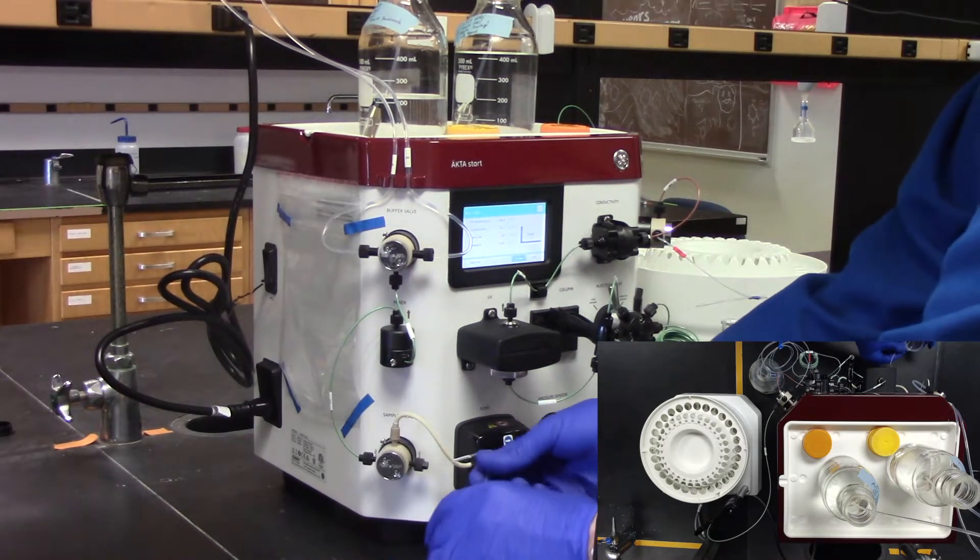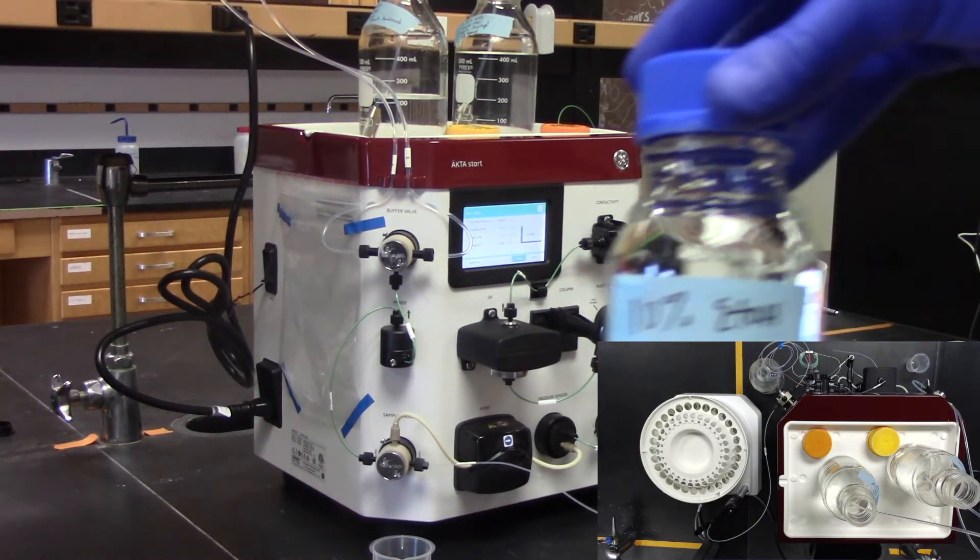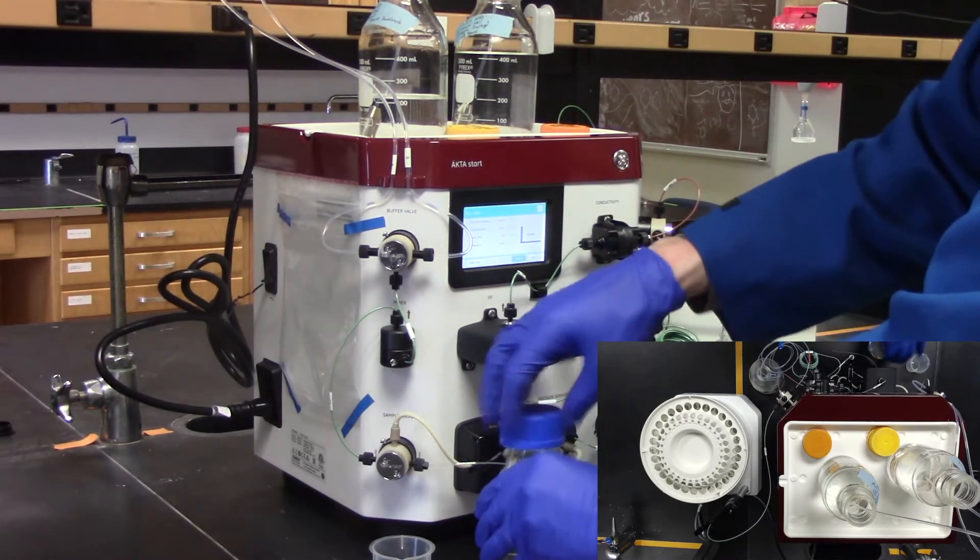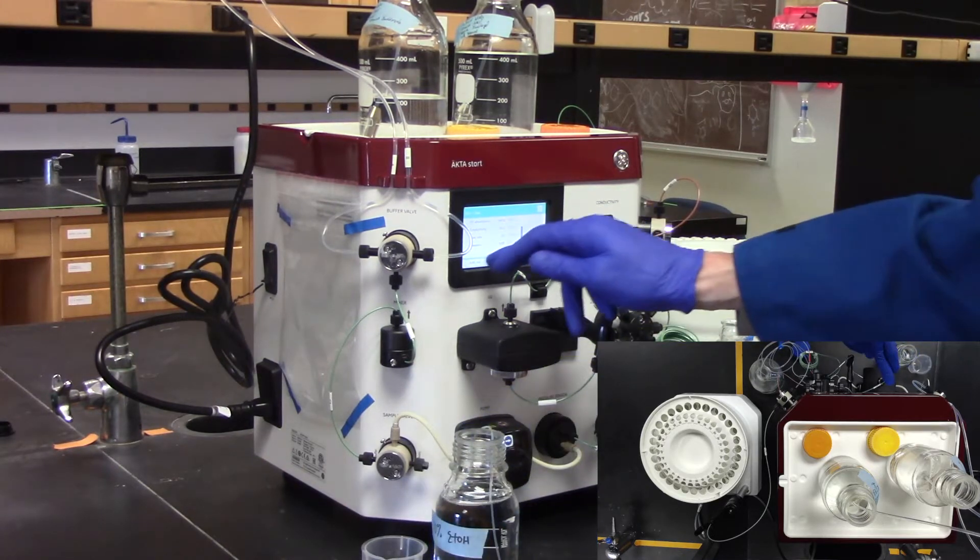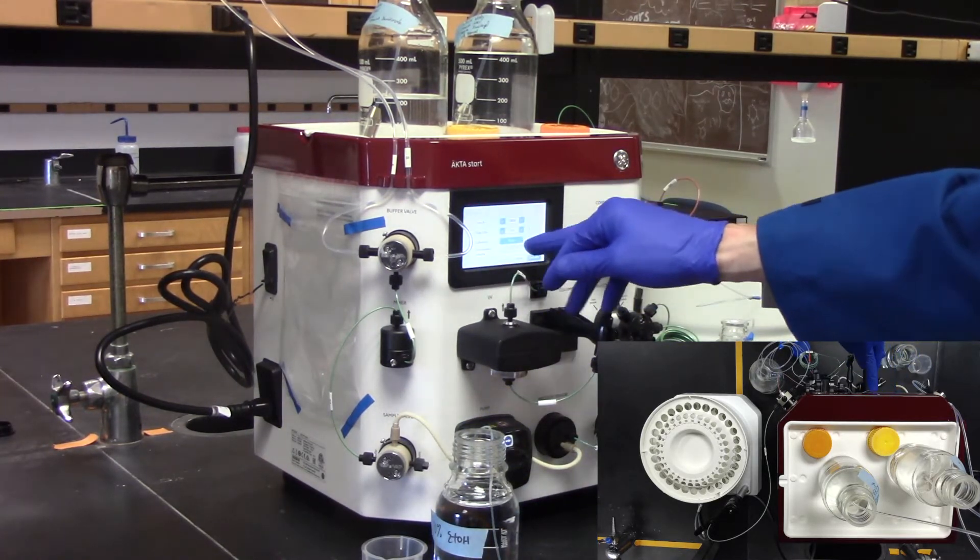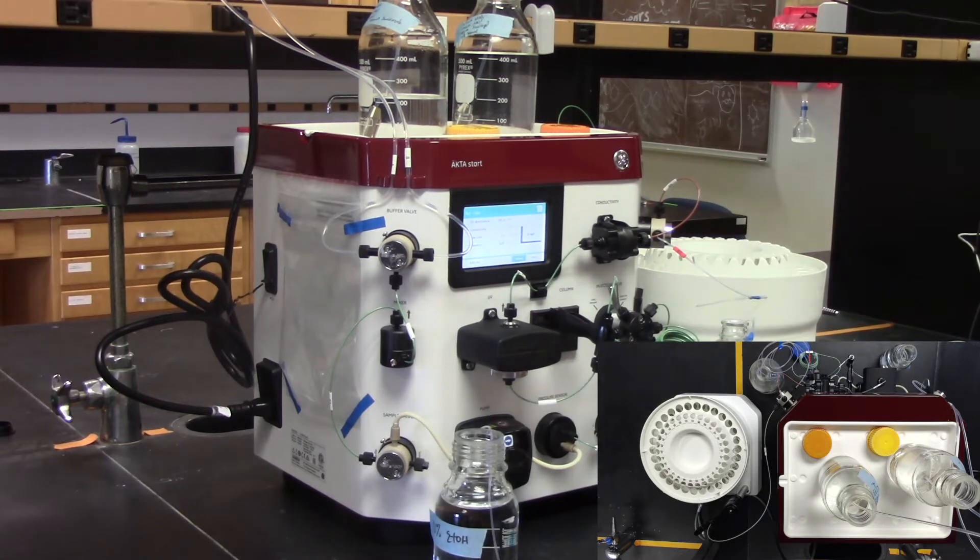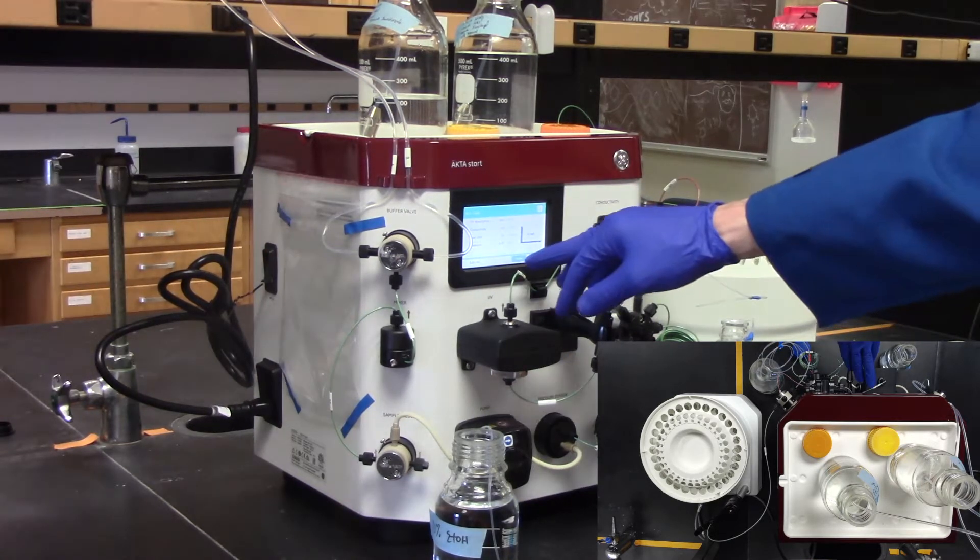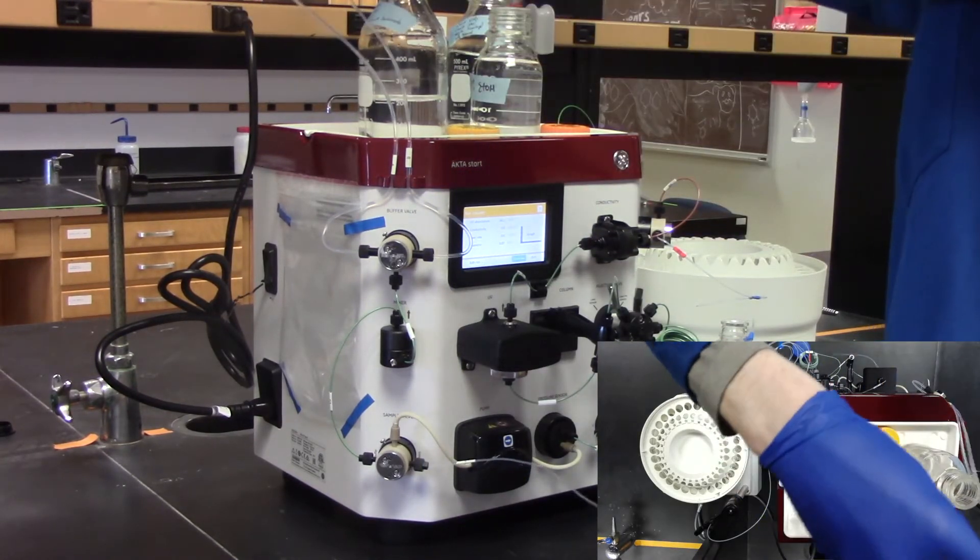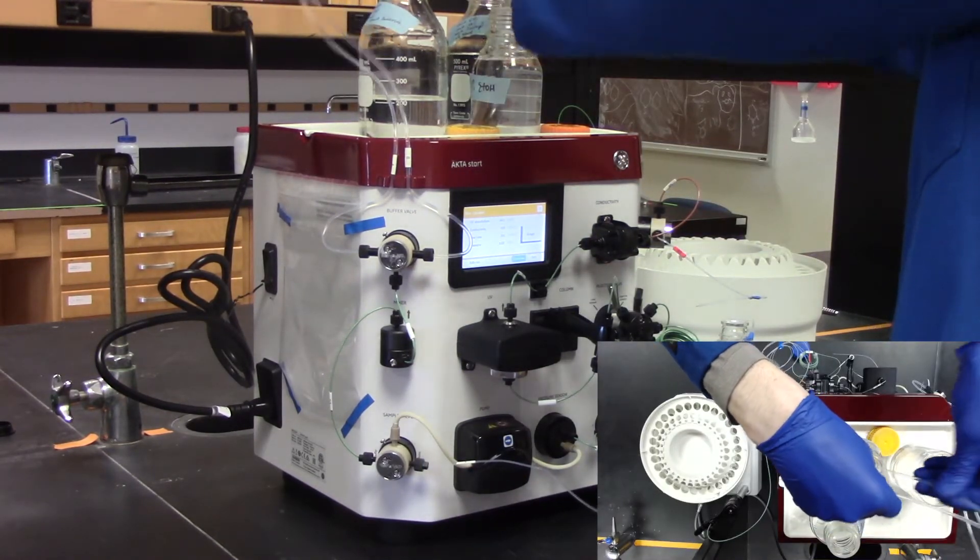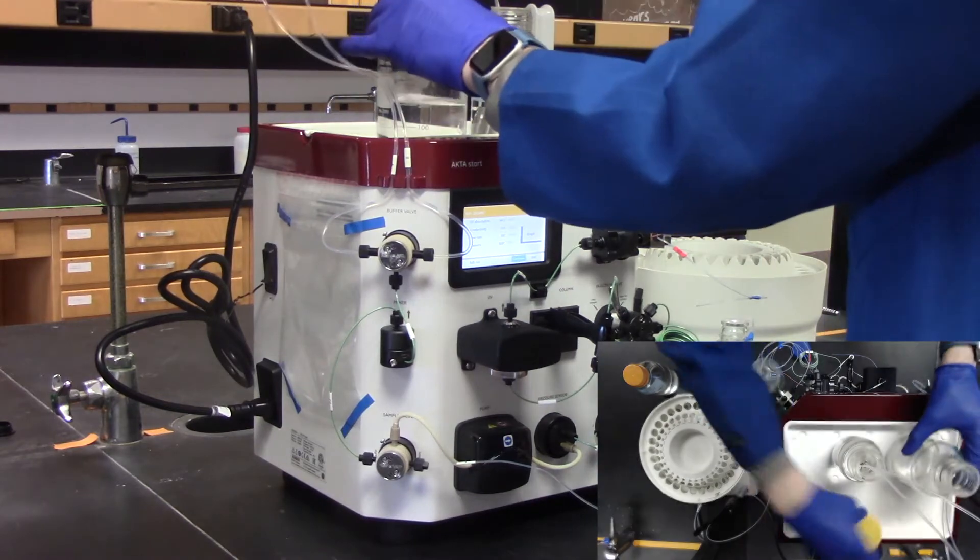It's now time to clean the FPLC. To do so, place the sample line in 10% ethanol and purge the sample line. Next, place the ethanol on top of the FPLC. Place both A and B lines into the ethanol and purge the lines.